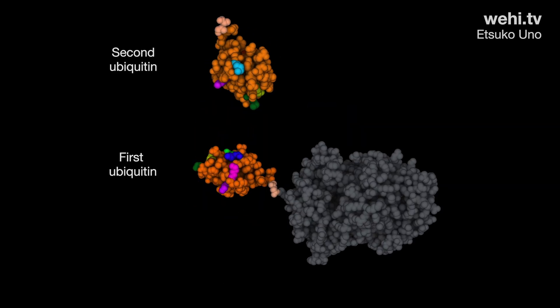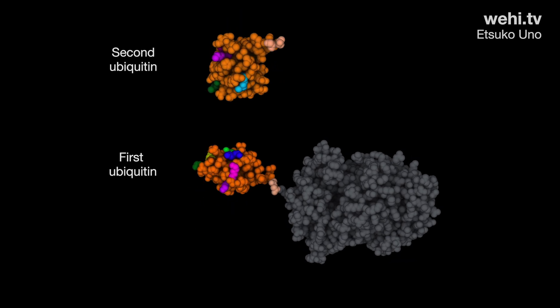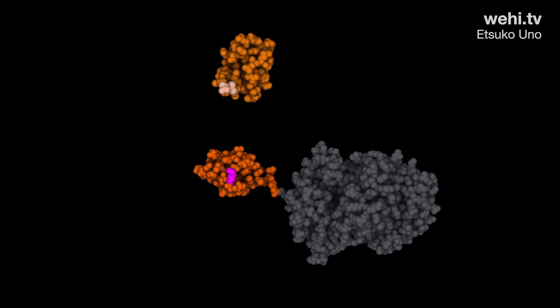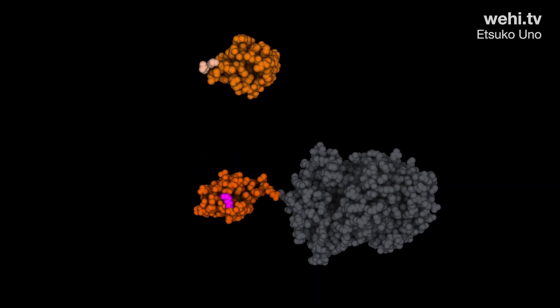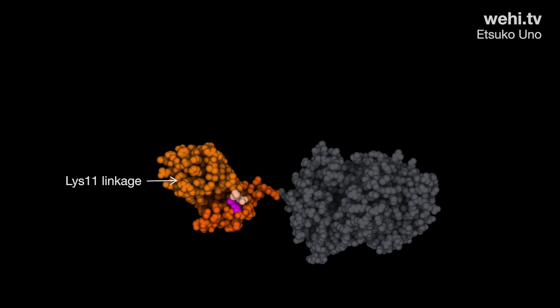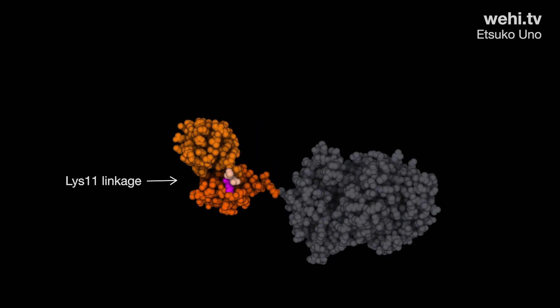Ubiquitin can also form chains on substrate proteins. A chain is formed when the terminal glycine of a second ubiquitin attaches to one of the methionine or lysine residues in the first ubiquitin. In this example, the terminal glycine of the second ubiquitin binds to the lysine in position 11 of the first ubiquitin, forming a lysine 11-linked diubiquitin chain.